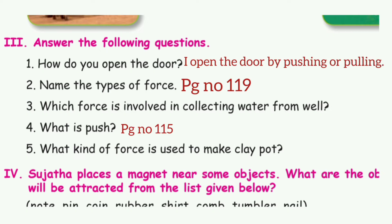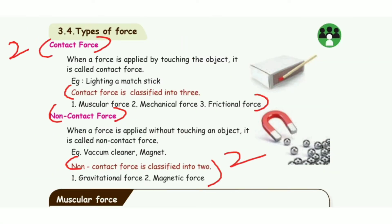Question 2: Name the types of force. Refer to page number 119. There are two types of force: contact force and non-contact force. Under contact force: muscular force, mechanical force, and frictional force. Under non-contact force: gravitational force and magnetic force.